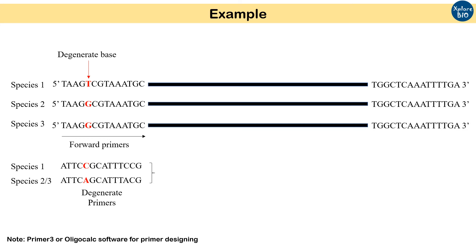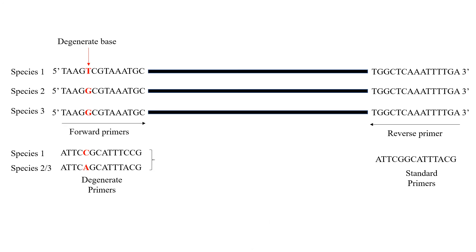Increasing the number of mismatched bases in the primer sequences increases the degeneracy of the primer. In this example, the reverse primer is a 100% match in the related species; hence there is no degeneracy and a standard primer can be designed for our species too. For performing PCR amplification or cloning, all possible degenerate primers — forward and reverse — are added to the same reaction mixture, so that any one of the degenerate primers may bind and amplify the sequence of our target gene.